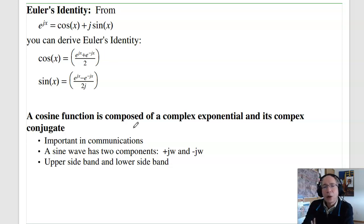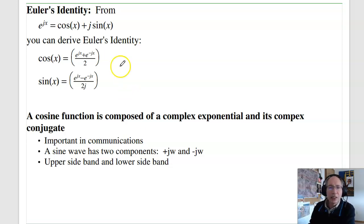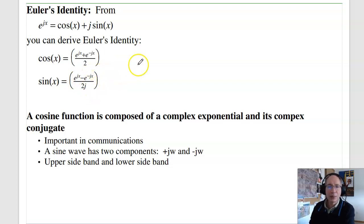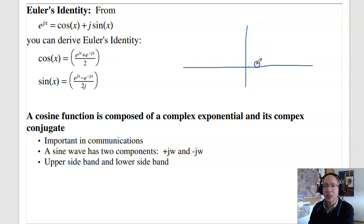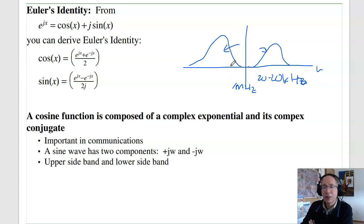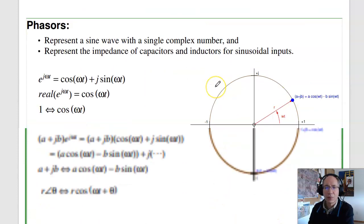Euler's identity says E to the Jx equals cosine x plus J sine of x. From that, cosine equals (E^Jx + E^−Jx)/2 and sine equals (E^Jx − E^−Jx)/(2J). This is important especially in communications — any audio signal from 20 to 20 kHz also has a complex conjugate. When you modulate it with AM radio at 1 MHz, you get an upper sideband and a lower sideband.